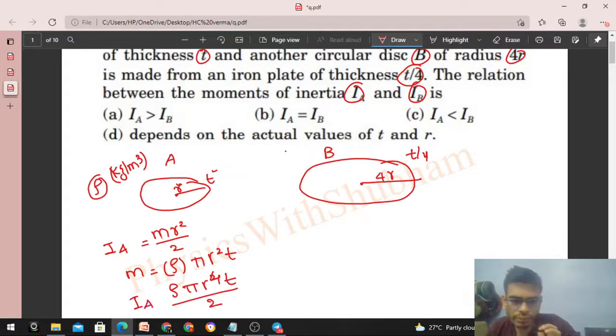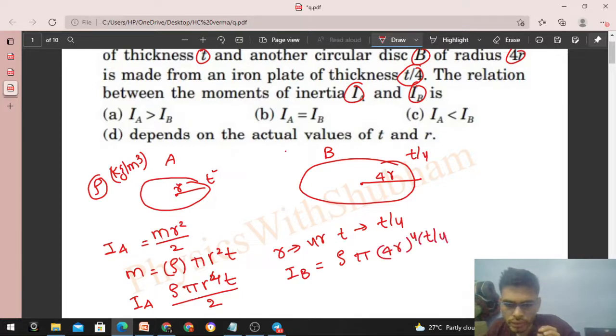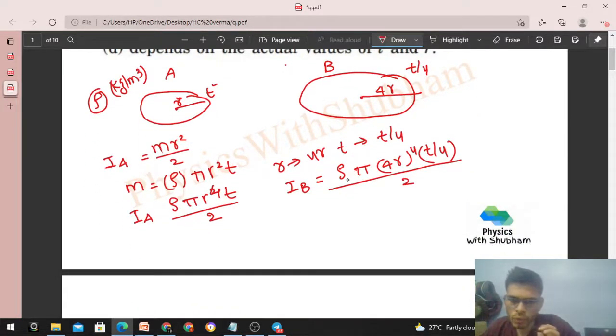For plate B, you can just put the value of r as 4r and thickness as t/4. If I put the value of r four times, that will be the value of IB, moment of inertia of disk B. So ρ × π × (4r)⁴ × (t/4) / 2. You can see (4r)⁴ divided by 4 is 4³ = 64 times IA. That is the value of IB.